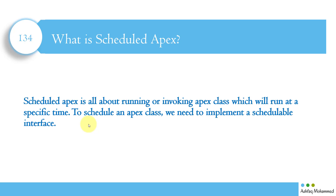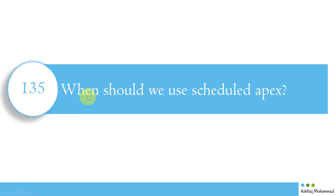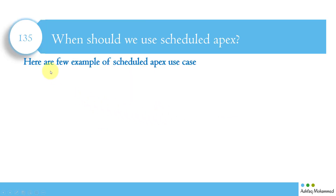Normally, batches or jobs are scheduled after business hours. That is the reason we use scheduled apex. To schedule an apex class, we need to implement a schedulable interface. Now, when should we use scheduled apex? I've given one example already, but here are a few more use cases.